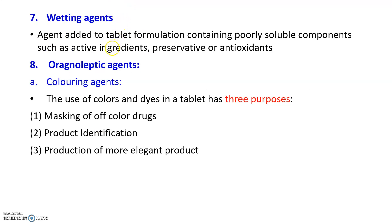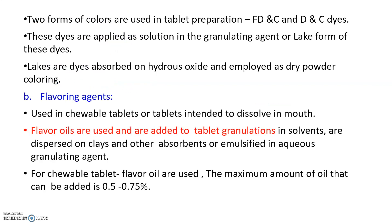Wetting agents are sometimes used in tablet manufacturing — these are agents added to tablet formulations containing poorly soluble components such as active ingredients, preservatives, and antioxidants. Coloring agents are added to tablets to mask the off-color of drugs, produce identification, and produce an elegant effect. Two forms of colors are used: FD&C and D&C dyes. These dyes are applied as a solution in coating agents, or in lake form — dyes or lakes absorbed on a soft bed and used as a dry powder coating.